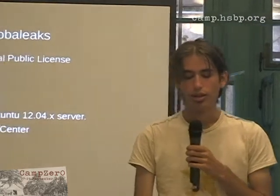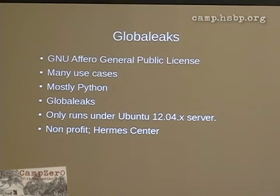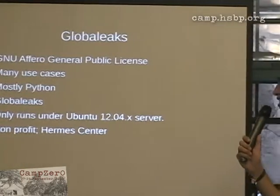So that's about it for DeadDrop. Then we go to GlobaLeaks. GlobaLeaks has the same license — the GNU Affero General Public License. It kind of has all these major use cases. It's mostly in Python as well with some HTML templating. The interesting thing is that it doesn't really run on free software — it's only compatible with Ubuntu 12.04, which is kind of sucky. It can run on Debian but you spend an entire weekend getting it to work. And they are backed by the non-profit Hermes Transparency Center in Italy, which creates a wide variety of software projects like GlobaLeaks, Tor2Web, and the anonymous Python web framework as well.